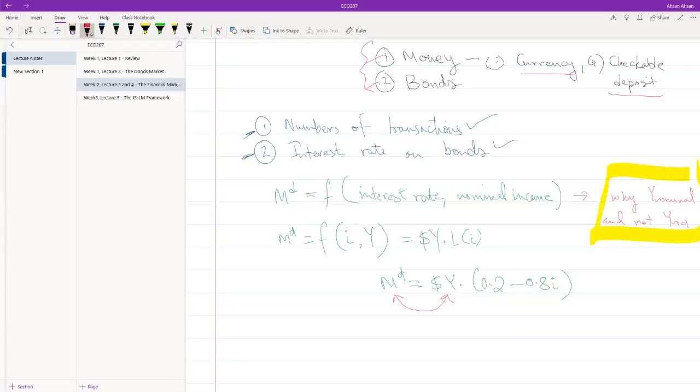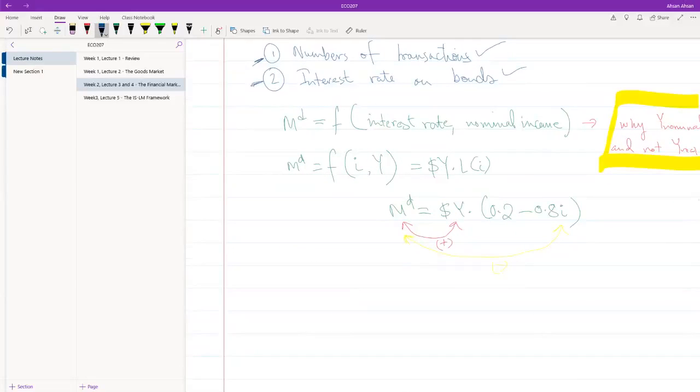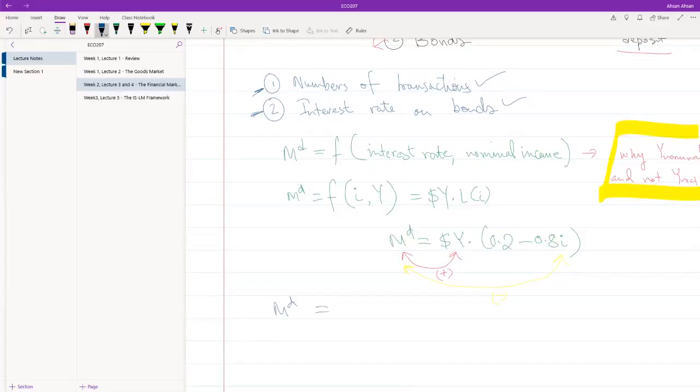The second thing we notice is that interest rate and money demand are negatively related. So this is negative and this is positive, and we have talked about why this might be the case as well. Basically, when interest rate is high, you want to put more of your money as bonds because then you can earn that high interest rate. But if you're holding it as money, you don't really earn any interest on money. So let me write this down again: money demand is equal to this. This is an important equation.